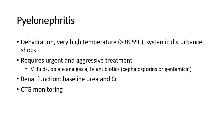A more serious condition of UTI is pyelonephritis, where there is infection spreading to the kidneys. Pyelonephritis is characterized by dehydration, a very high temperature which is more than 38.5 degrees Celsius. There might be systemic disturbance and sometimes the patient might present with shock. This condition requires urgent and aggressive treatment, which includes intravenous fluids, opiate analgesia, and IV antibiotics such as cephalosporin or gentamicin.